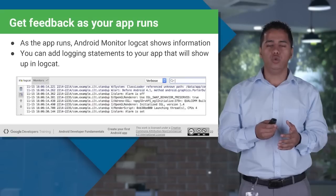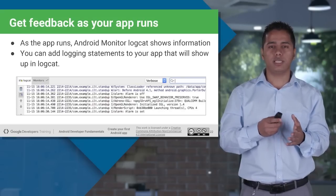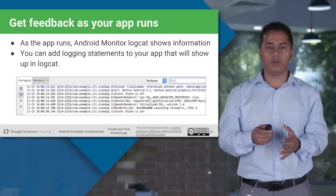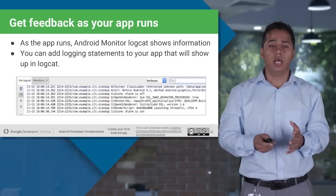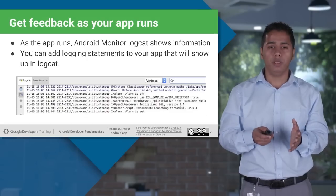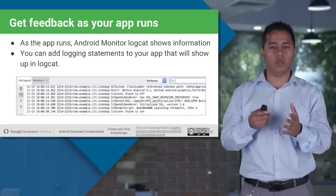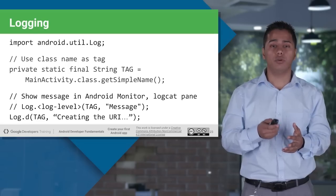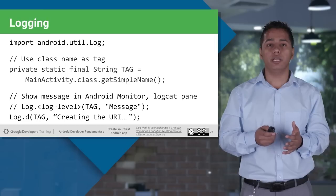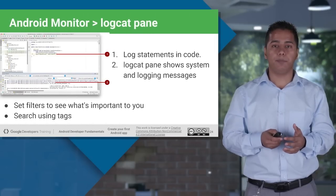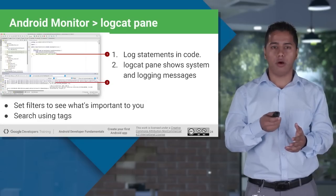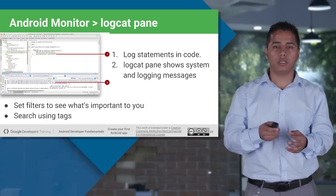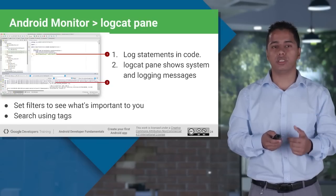As your app runs and you want to see what is going on inside it, we have the logcat tool inside the Android Monitor. Whenever you run your app, you will see all the logs inside logcat popping up, keeping track of whatever is happening inside your emulator or Android device. To put a log, use log.d for debug mode, give a tag, and give the message. You will learn about logging in detail in further slides. You can see the log statement in your Java code and then view it at the bottom in the logcat pane inside Android Monitor.